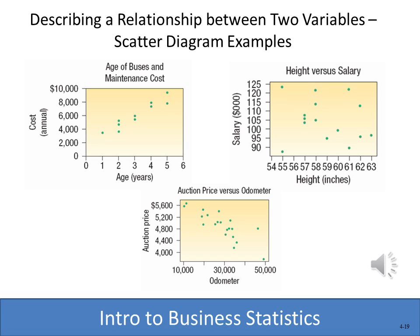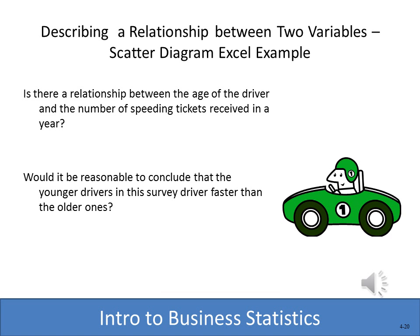The slide shows examples of scatter diagrams. Height versus salary shows dots all over the place — no clear relationship. But age of buses versus maintenance costs shows a pattern: the older the bus, the higher the maintenance costs. That's what a scatter diagram can tell us quickly and easily. Back to our survey: we want to see if driver age is related to speeding tickets in the last year.